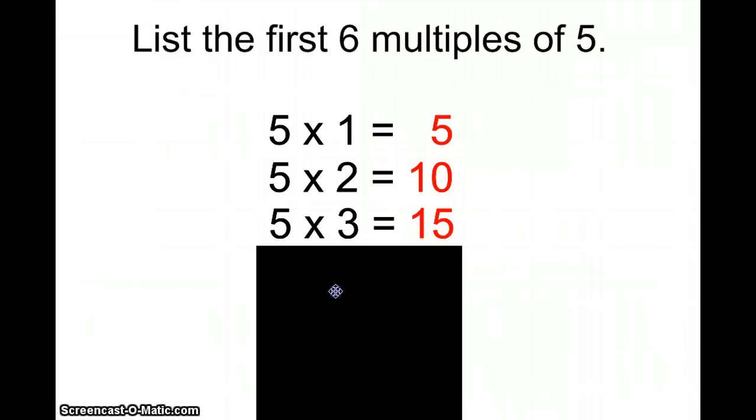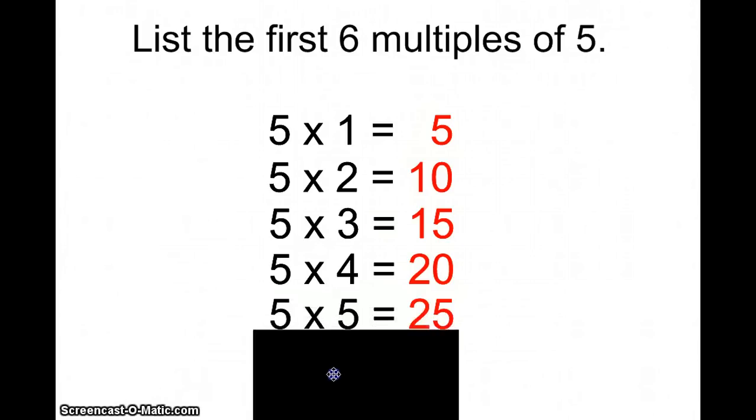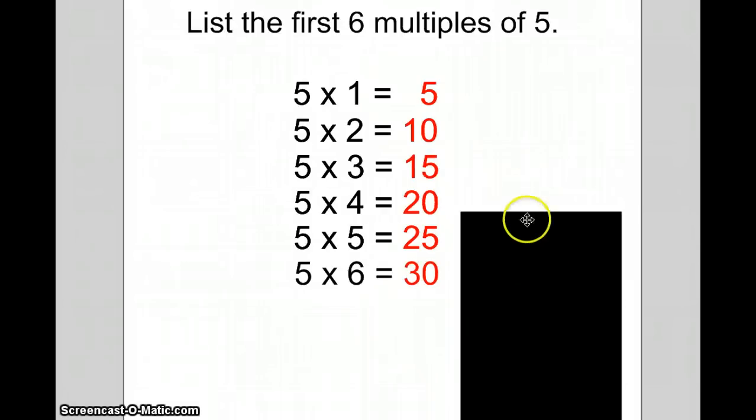Then you keep going. 5 times 3 is 15. 5 times 4 is 20. 5 times 5 is 25. Finally, 5 times 6 is 30.